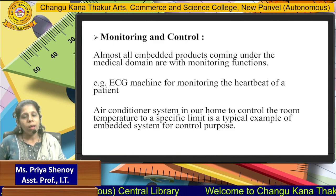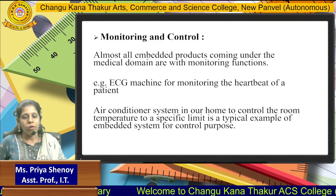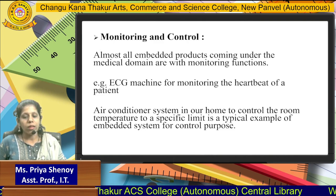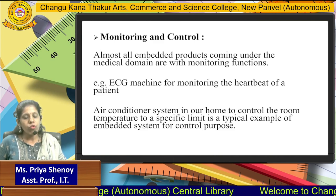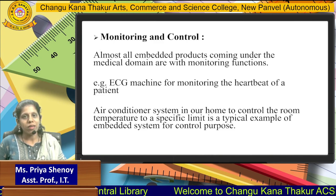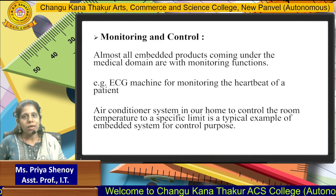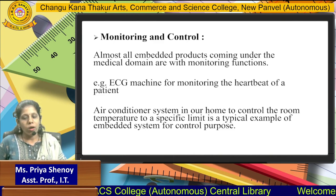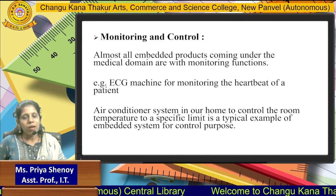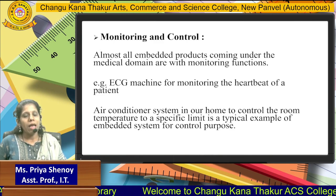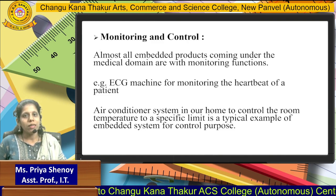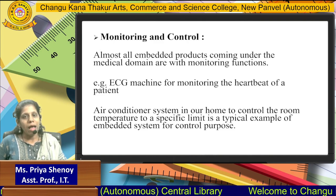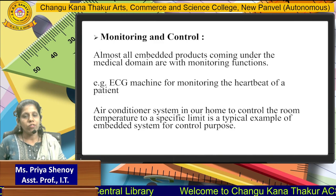Lastly, embedded systems can be used for monitoring and control. All embedded products that come under the healthcare or medical domain are with monitoring functions. The simplest example is the ECG machine, which is used for monitoring the heartbeat of a patient. Another example where embedded system is used for control is the air-conditioning system in our home, which is used to control the room temperature — it can be considered as an example of embedded system used for control purpose.